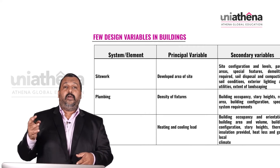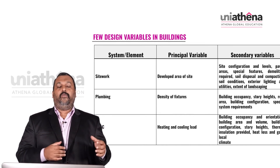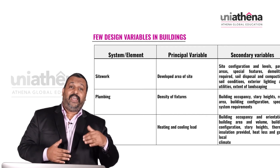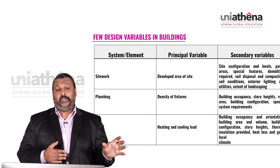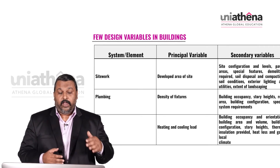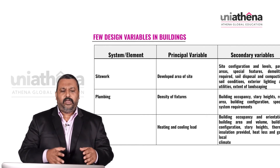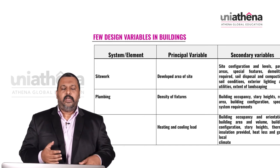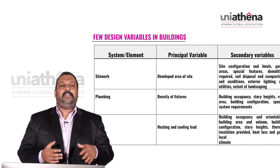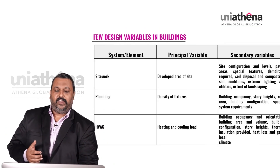For HVAC — heating, ventilation, and air conditioning — the principal variable is the heating and cooling load: how much heating and cooling is required. Secondary variables are building occupancy and orientation, building area and volume, building configurations, story heights, thermal insulation provided, heat loss and gain, and local climate.